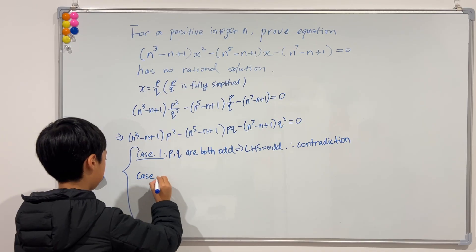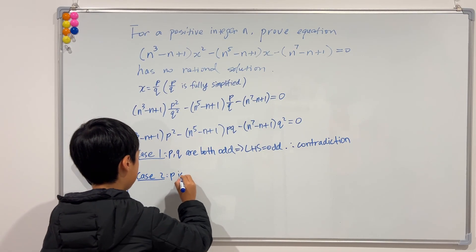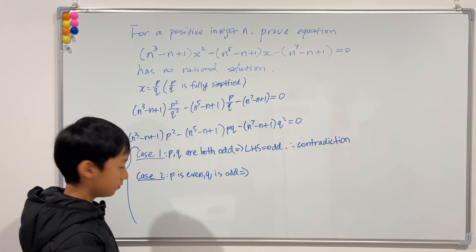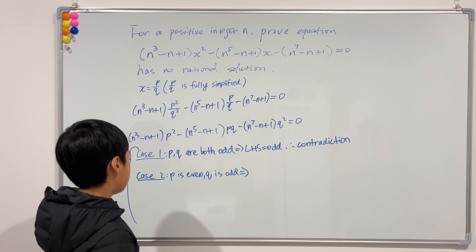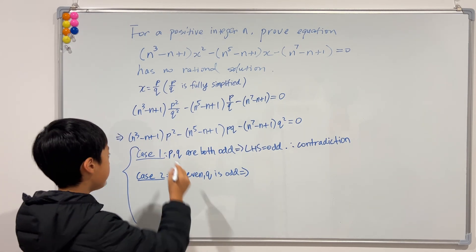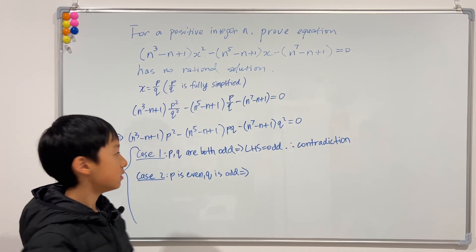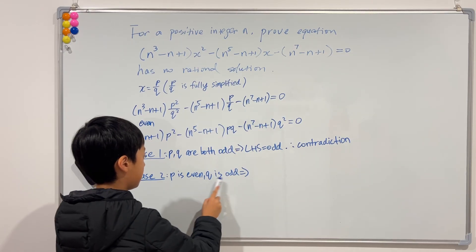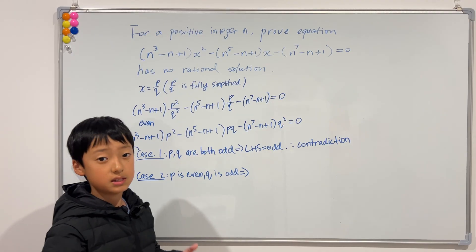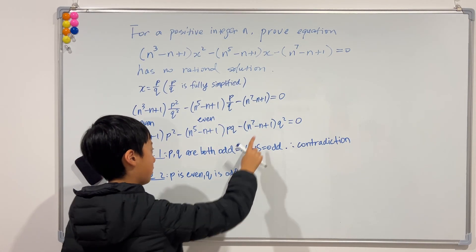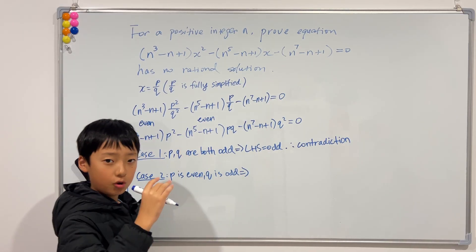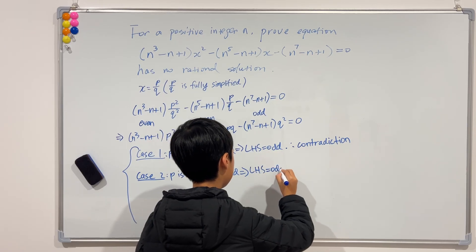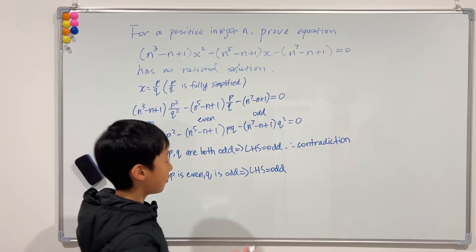Case 2: p is even and q is odd. If p is even, then p squared is even. Odd times even is even. Now p times q is even times odd, which is even. Odd times even is even. The last term: q squared is odd, and odd times odd is odd. So the left-hand side altogether is odd, but the right-hand side is 0 which is even. Again, we have a contradiction.